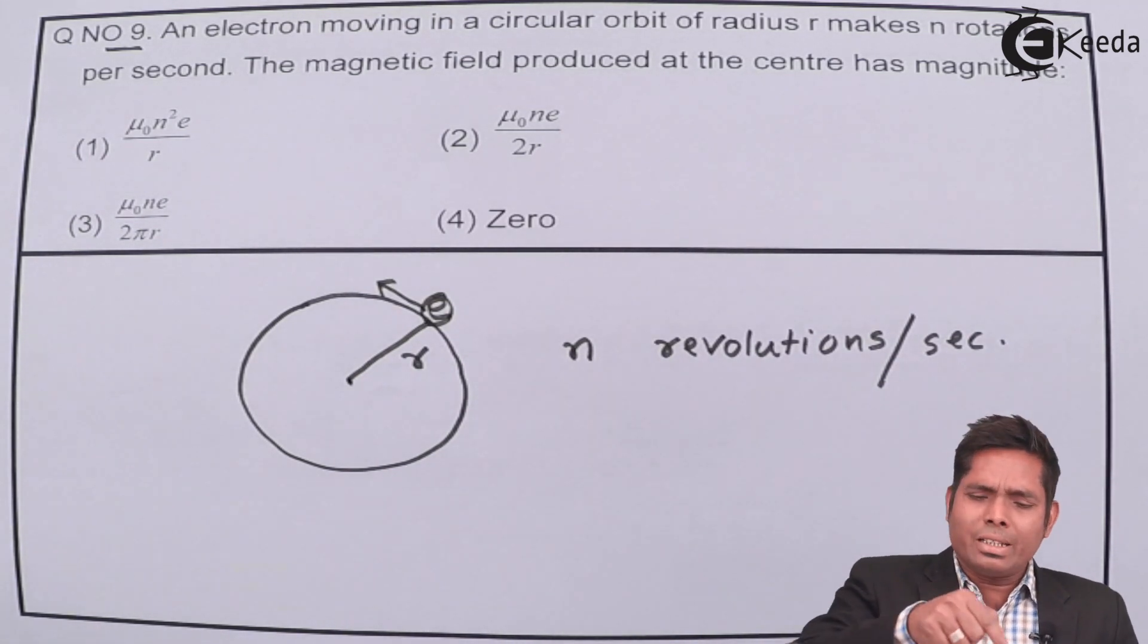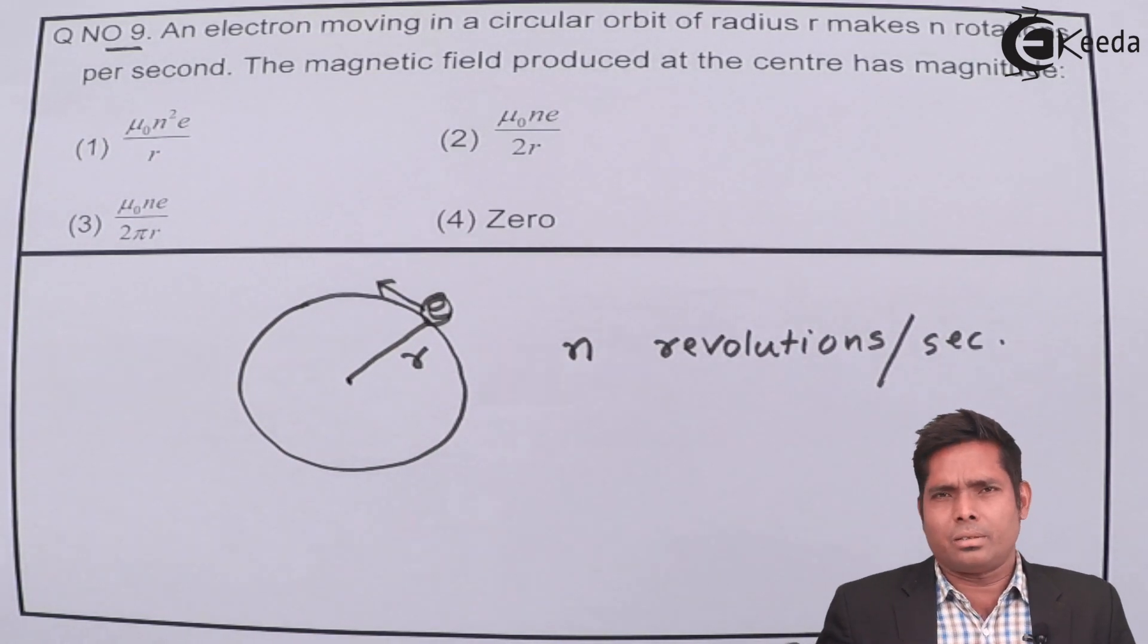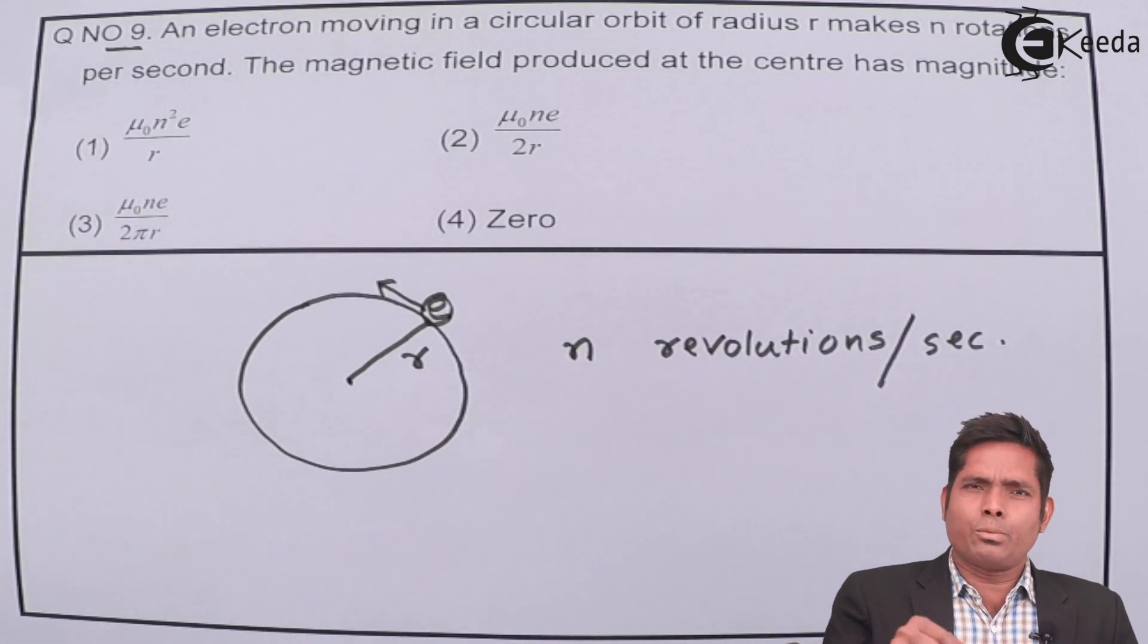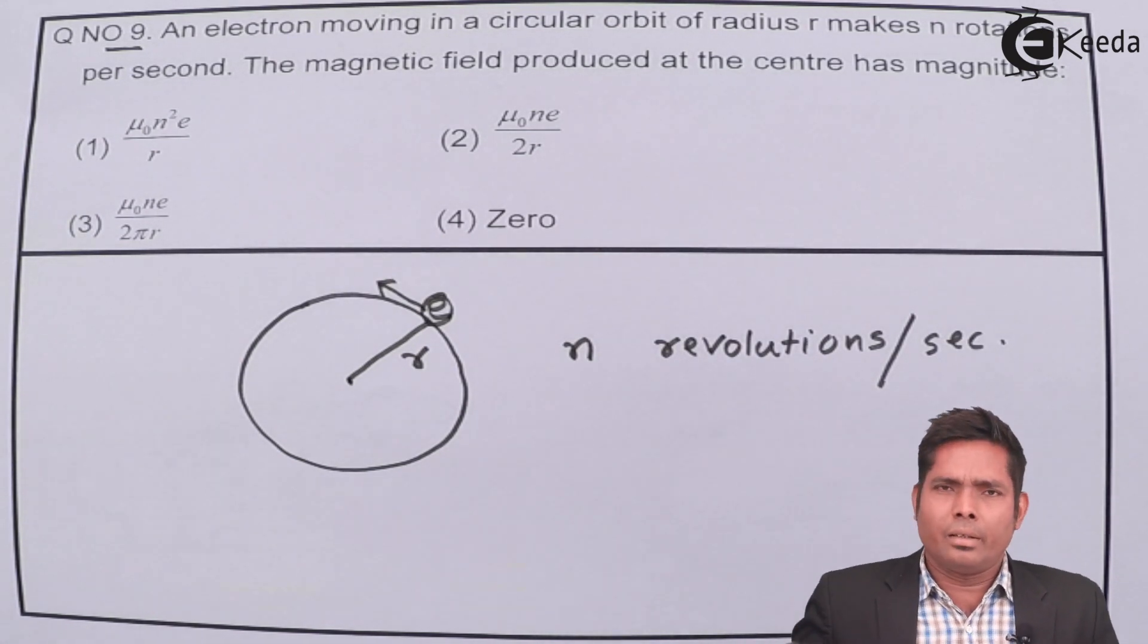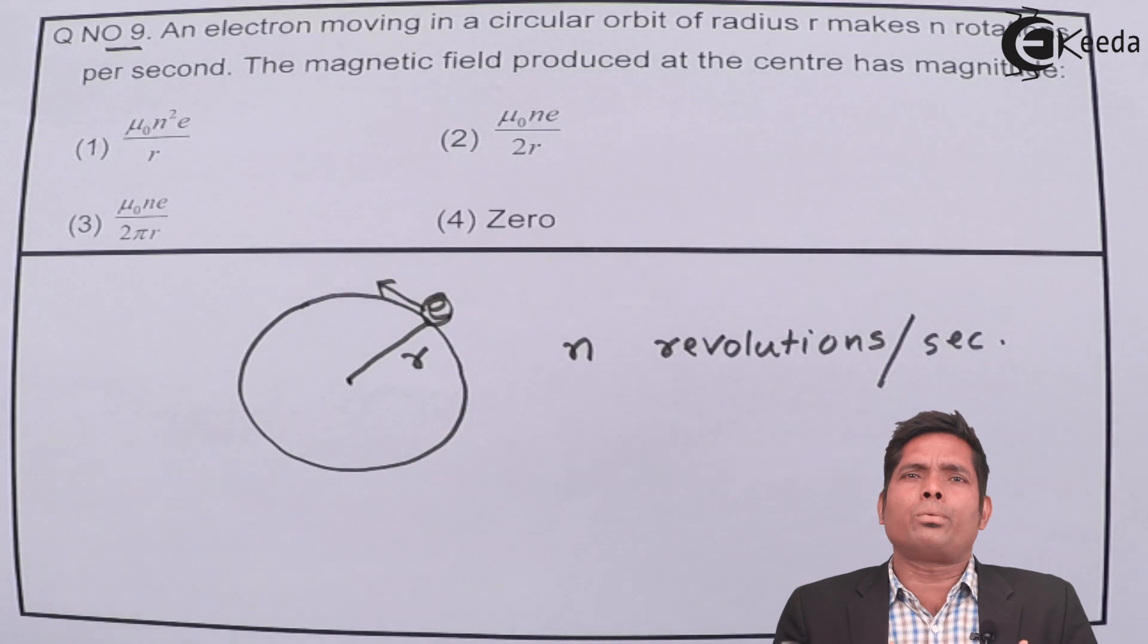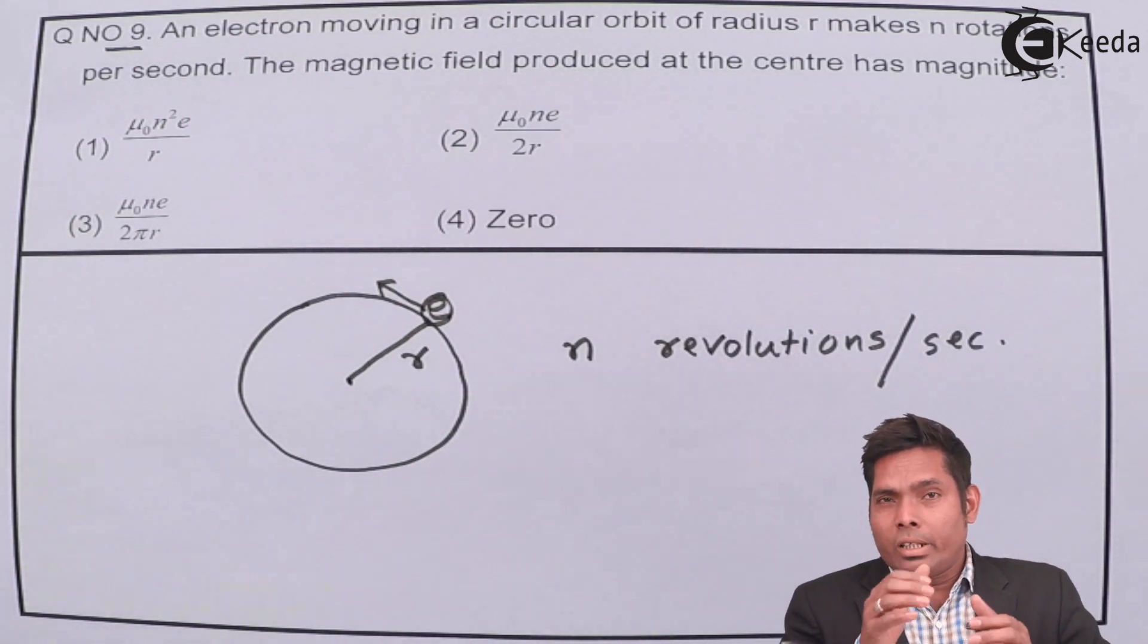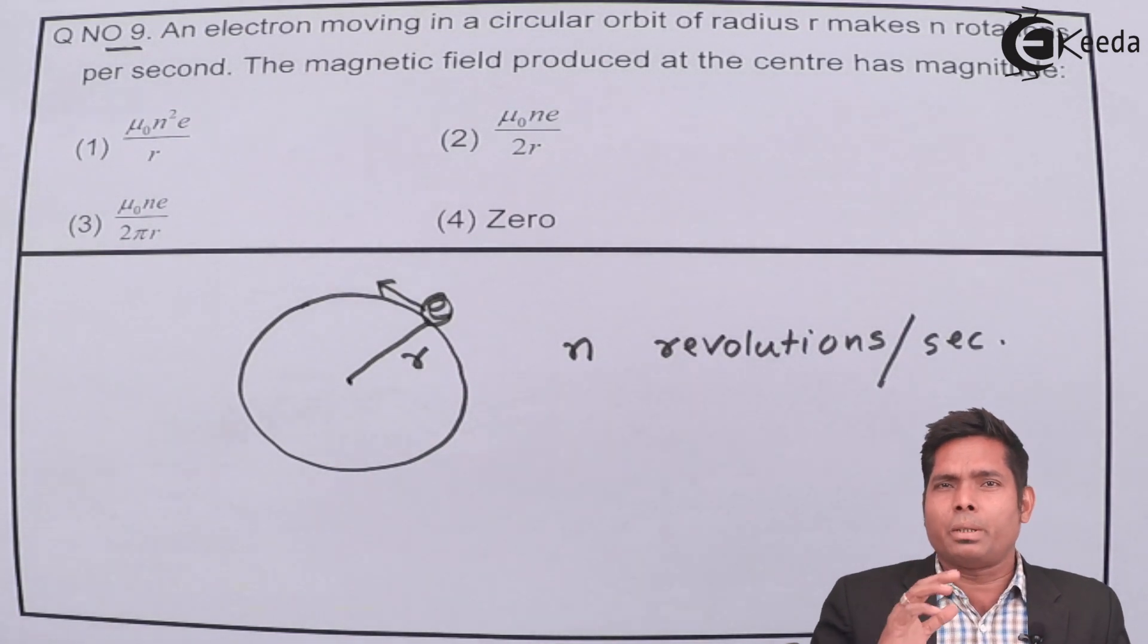Now, when electron is moving in a circular orbit, electron is a charged particle. So, when the charge is moving in a particular line, then what is current? Current is basically the rate of flow of charge. Now, here the charge is nothing but the electron.